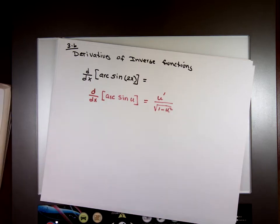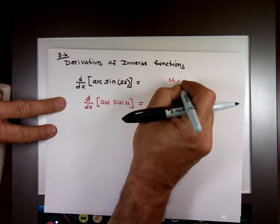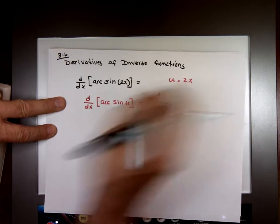The derivative of arc sine of u is equal to u prime over square root of 1 minus u squared. So in this example, u happens to be 2x.